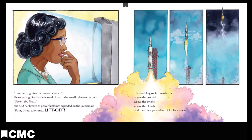10, 9, ignition sequence starts. Heart racing, Catherine leaned close to the small television screen. 7, 6, 5. She held her breath as powerful flames exploded on the launch pad. 4, 3, 2, 1, liftoff. The rumbling rocket slowly rose above the ground, above the smoke, above the clouds, and then disappeared into ink-black space.